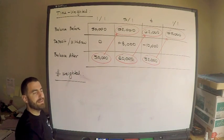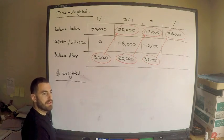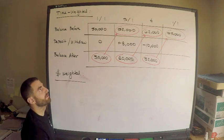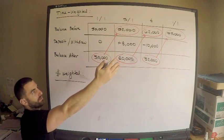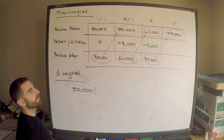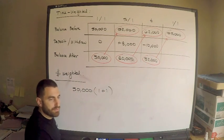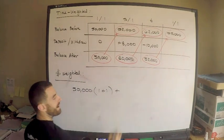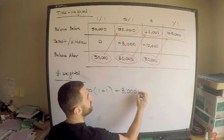All you care about for dollar-weighted is the initial balance, which is $50,000. Then you need to encompass the withdrawals and deposits throughout the year, and then the ending balance. The way I think about it is that $50,000 accumulates one year. Everything using the dollar-weighted return approach accumulates with simple interest.